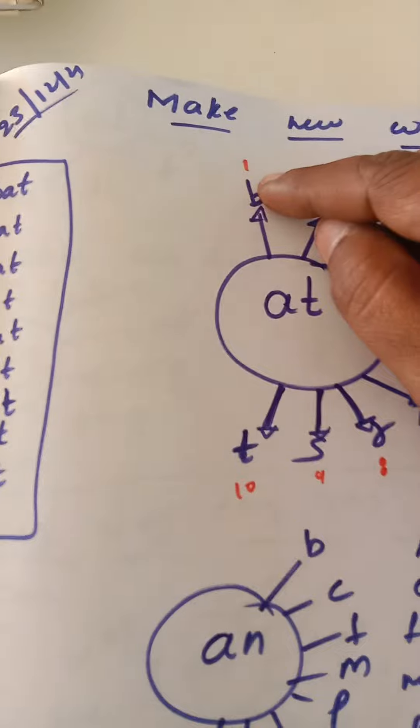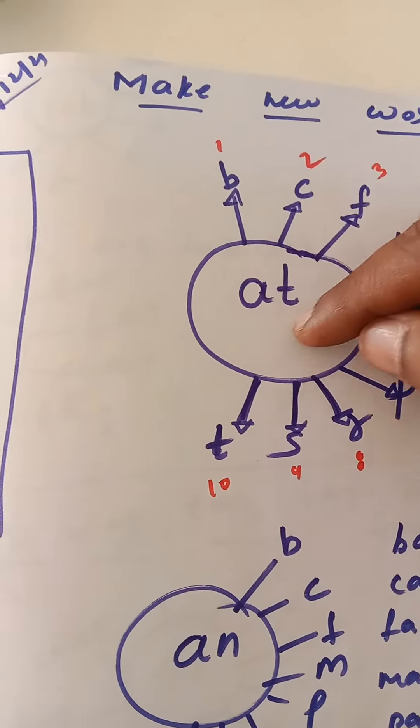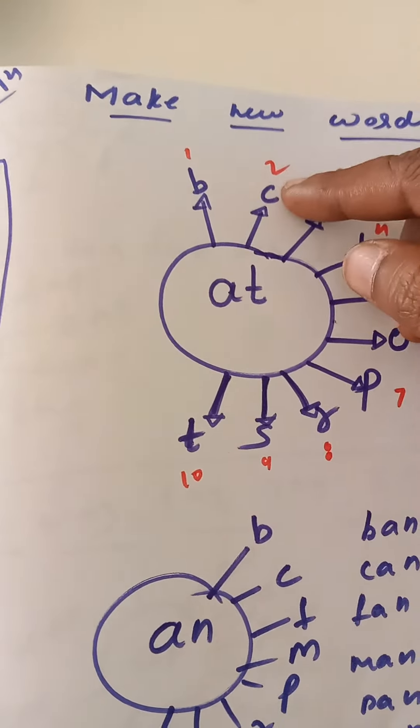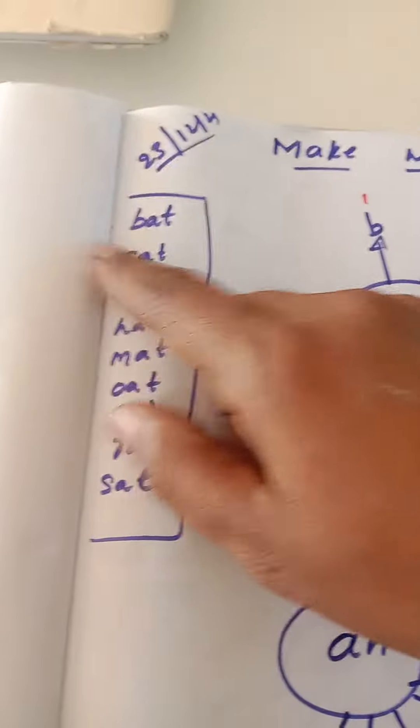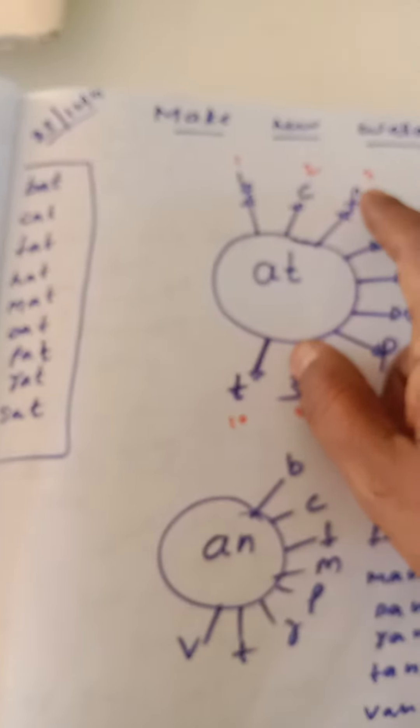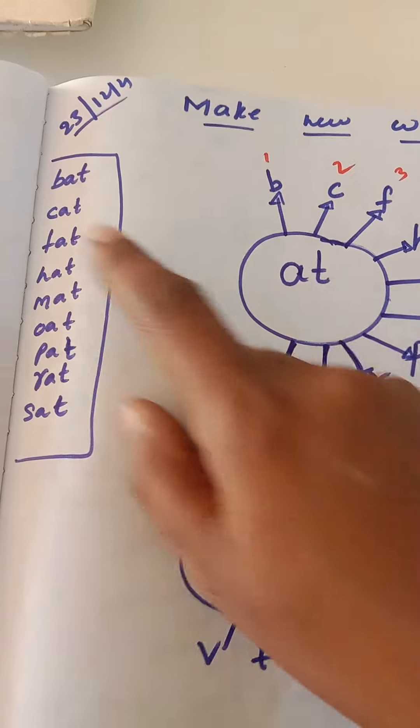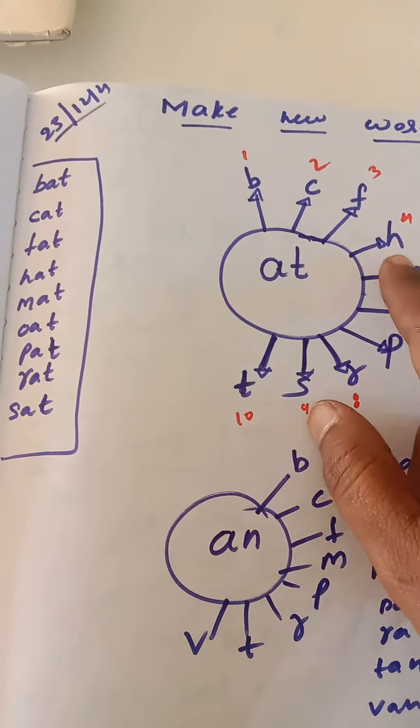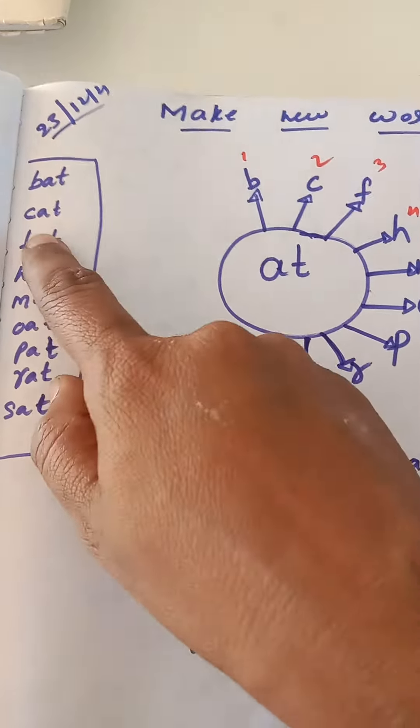Okay, now B sounds B, A, T - Bat. C, A, T - Cat. F, A, T - Fat. H, A, T - Hat.